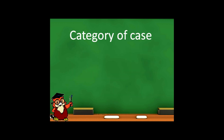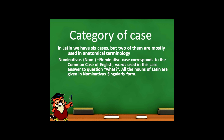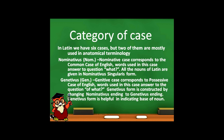Category of case. In Latin we have six cases, but two of them are mostly used in anatomical terminology. The first is nominativus. Nominative case in Latin corresponds to the common case in English. Words used in this case answer the question 'what?' All nouns of Latin are given in nominativus singularis form. The second is genitivus. Genitive case in Latin corresponds to the possessive case in English. Words used in this case answer the question 'of what?' The genitivus form is constructed by changing the nominativus ending to the genitivus ending, and it is helpful in indicating the base of the noun.